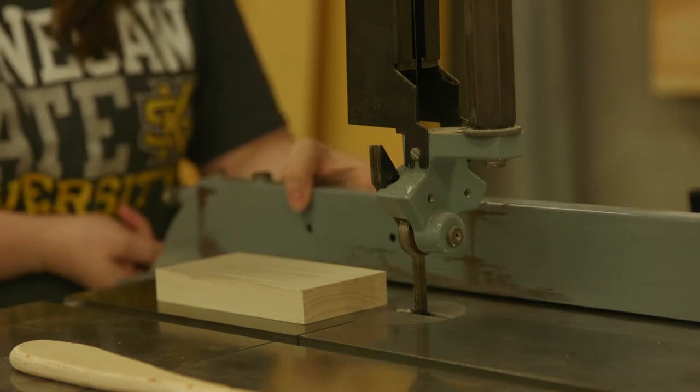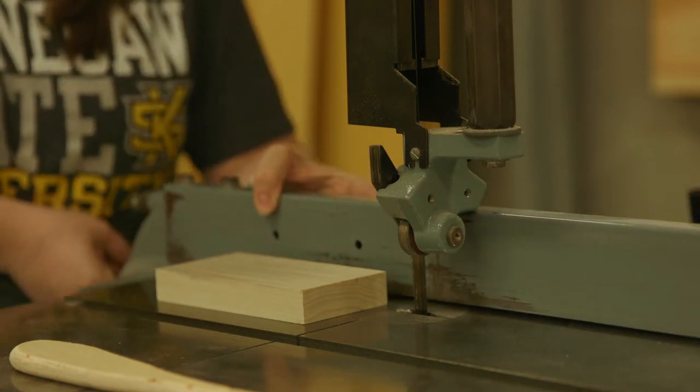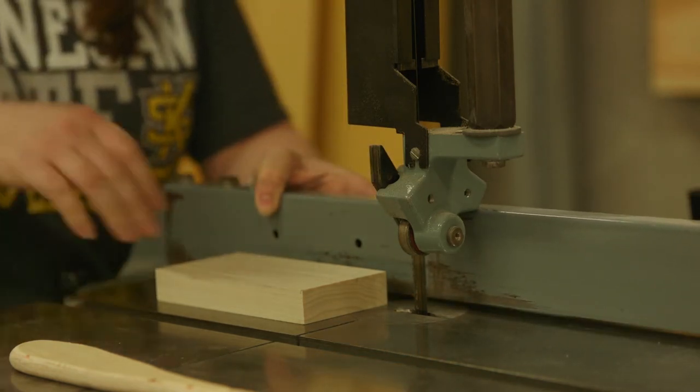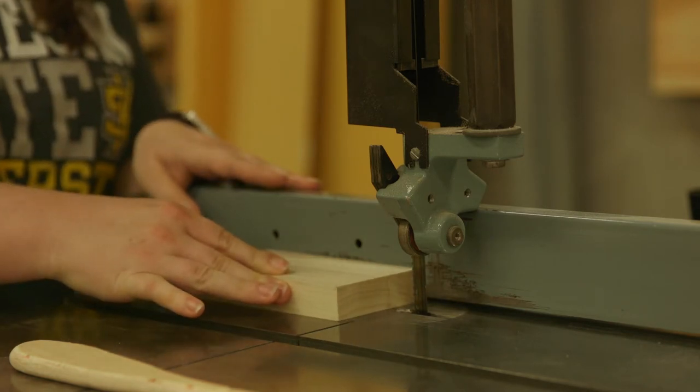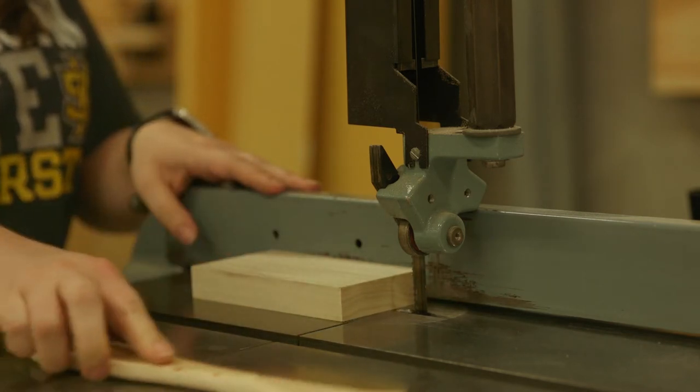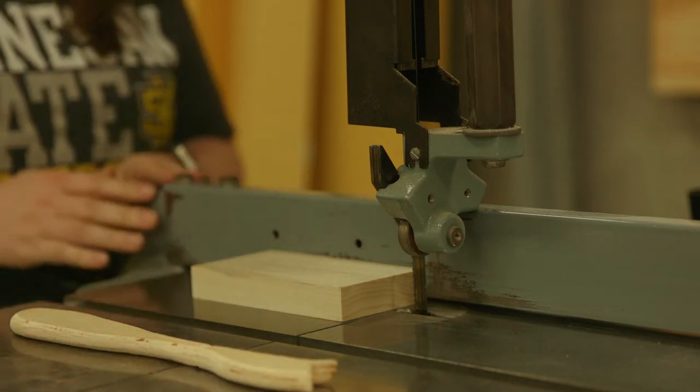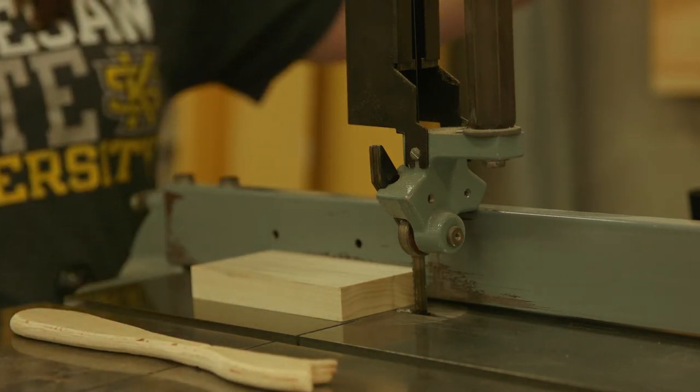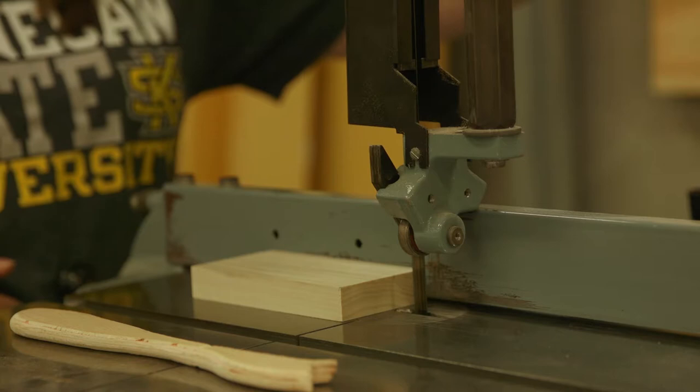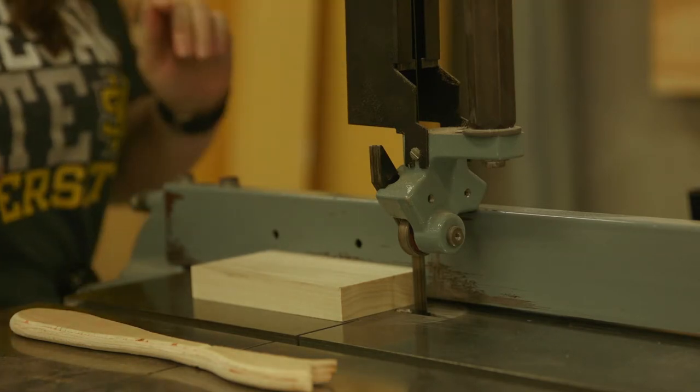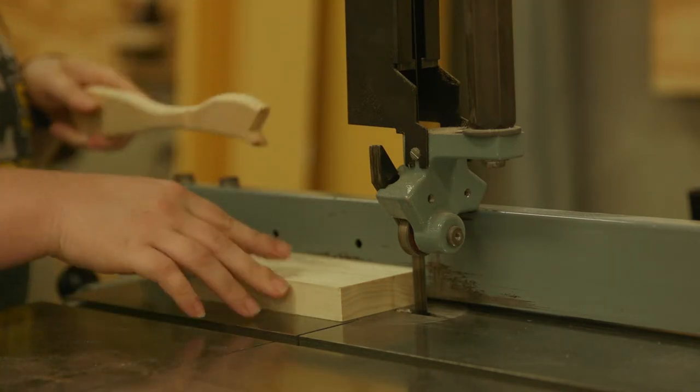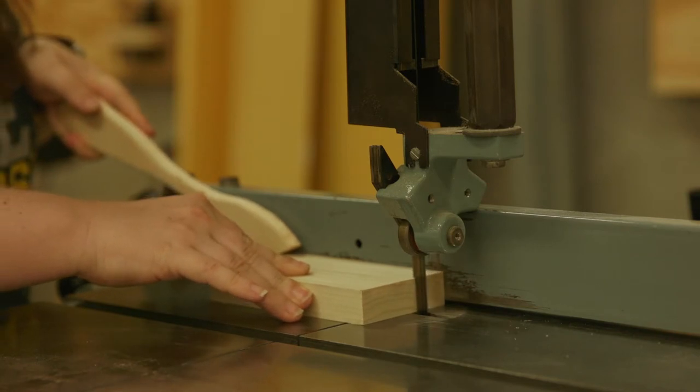For a rip cut, set the fence to the desired distance. Position the material in preparation for the cut. Make sure any push blocks that will be used to push the material through the saw are within easy reach. Turn on the saw and then make the cut, moving the material smoothly through the saw.